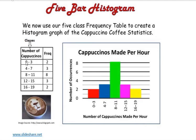Notice if we subtract the first number in each class from the next highest one — so 4 minus 0 is 4, 8 minus 4 is 4, 12 minus 8 is 4, 16 minus 12 is 4 — that's the class width. So the class width here is 4. And we need to make sure that our class widths are equal in space when we're making these histograms.